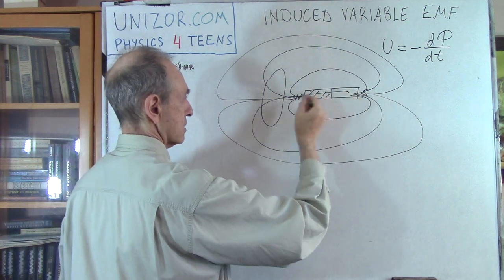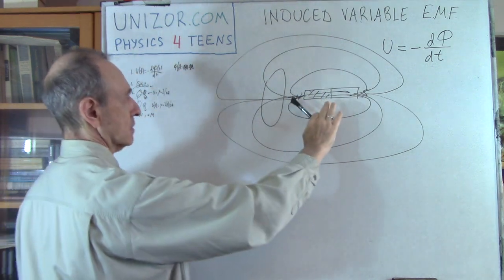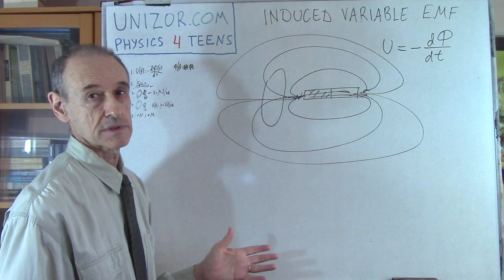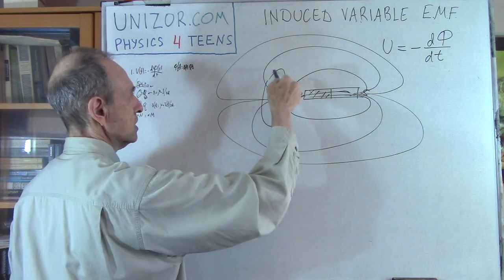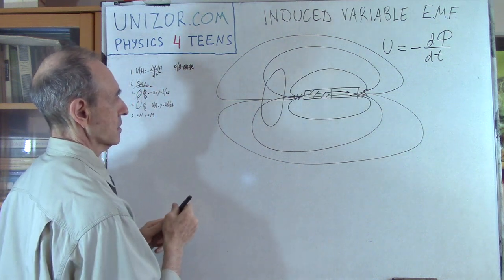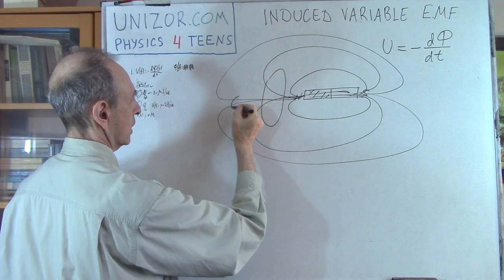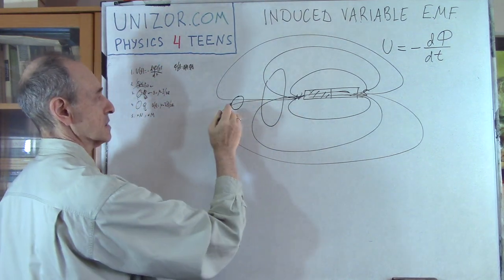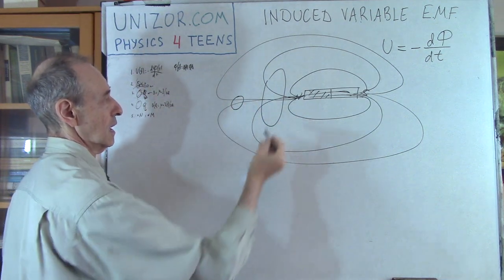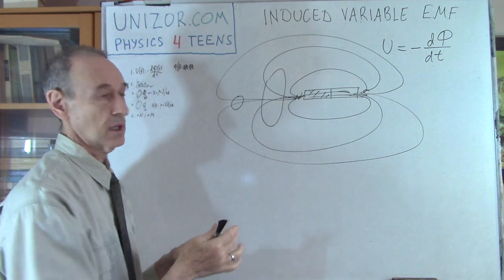Inside the magnet the field lines continue, because magnetic field lines are always closed. Now, what happens if this permanent magnet stands still and the wire loop is also in a stationary position? Nothing happens. As soon as we start moving, magnetic field lines are different. When this loop is very far, the magnetic field lines are almost parallel to the loop plane — the lines don't cross through it. There is no change in the magnetic flux because the area stays the same and the magnetic field intensity is also the same.